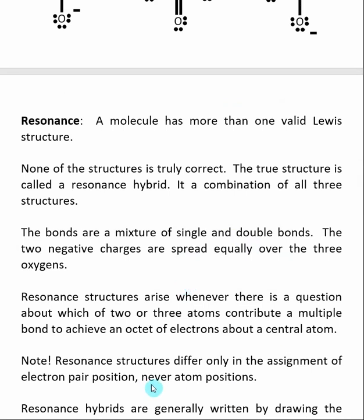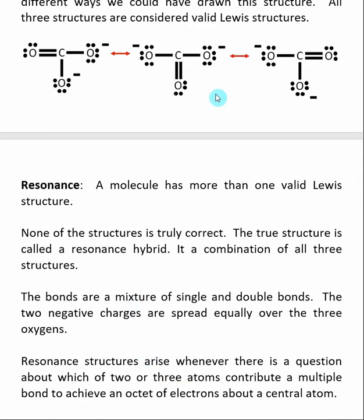So one important point we want to make is the difference between these is only in the movement of electrons. So resonance structures only differ in the location of the electrons inside of the Lewis structure. So these are not isomers. Isomers imply a different connection in terms of the atoms.